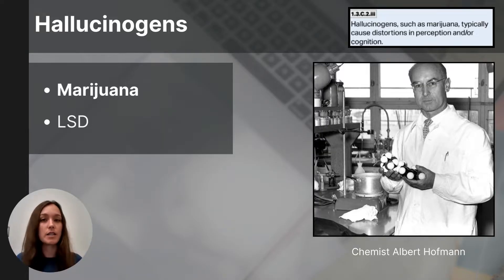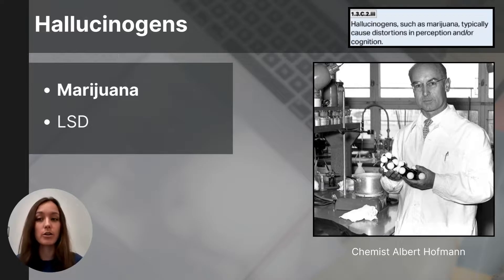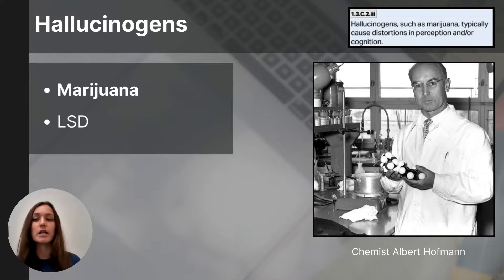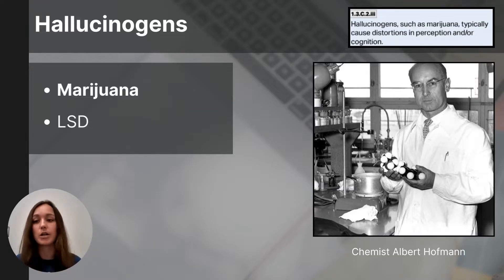THC can amplify sensitivity to colors, sounds, tastes, and smells, and cause agitation, and in greater quantities lead to paranoia. Marijuana products are also used for medicinal purposes, such as alleviating chronic pain, reducing nausea in chemotherapy patients, and providing pain relief for those with multiple sclerosis. However, it's important to note that marijuana can impair learning and memory, and is also a predictor of risk for traffic incidents, chronic bronchitis, psychosis, and social anxiety disorder.